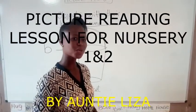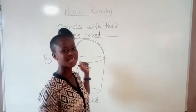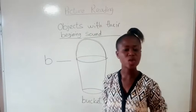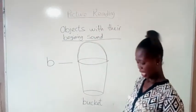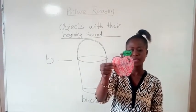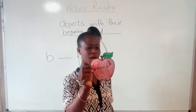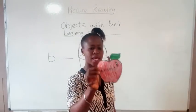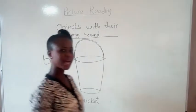Hello class. Good morning once again and welcome to your nursery class. In our previous lesson, we talked about objects with their beginning sound and we showed an apple. Now you know A is for apple. So A is for apple. Very good. We are done with our revision.